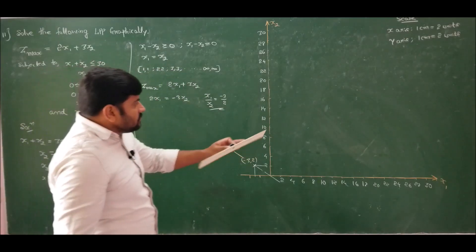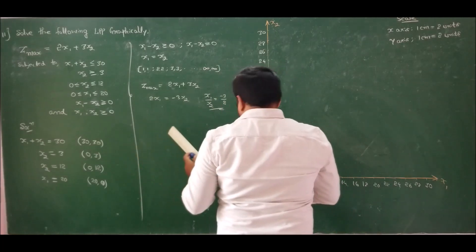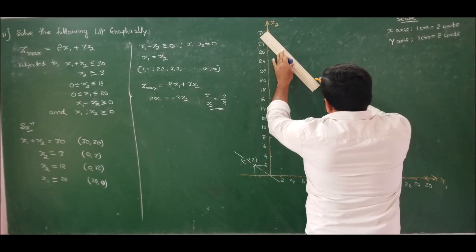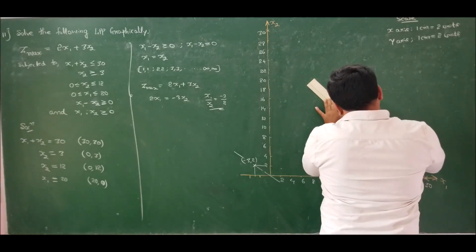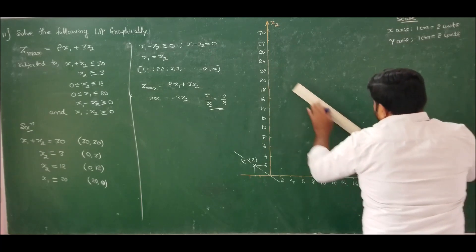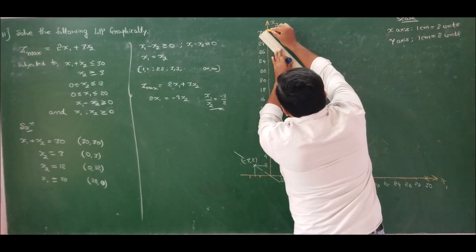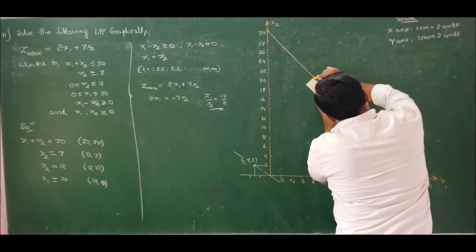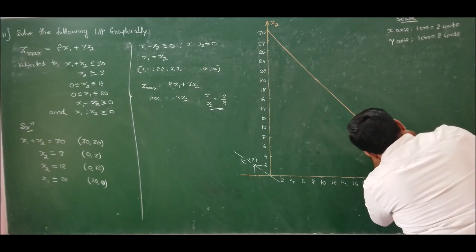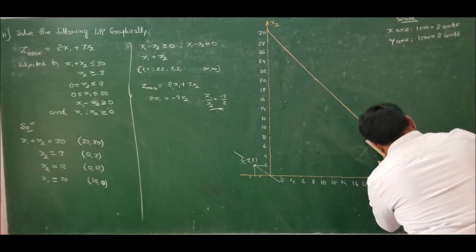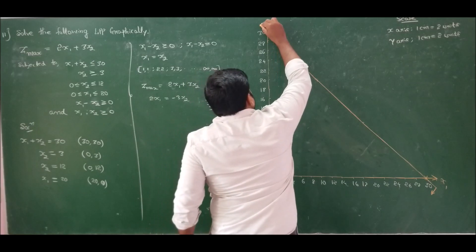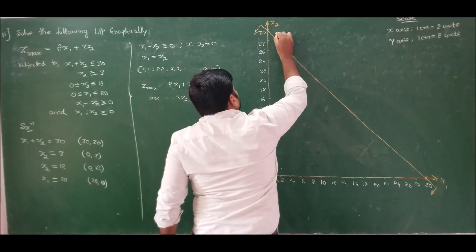Now inserting the constraints on the graph. The first constraint has coordinates (30, 30) — join these two points. Since it is less than or equal to, the line should move downward. This is our first constraint.